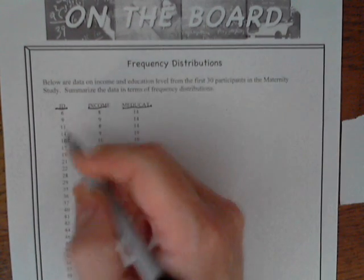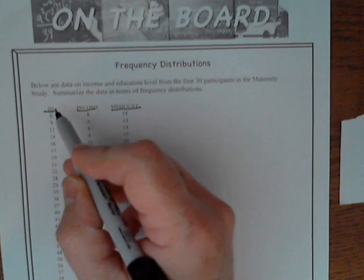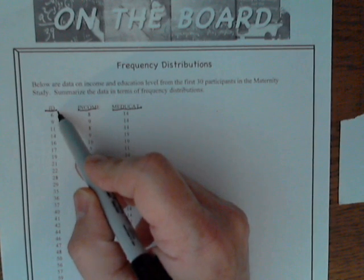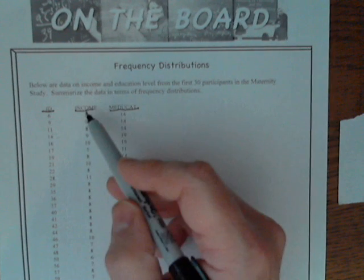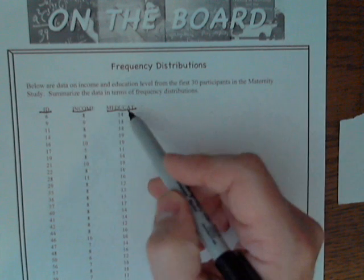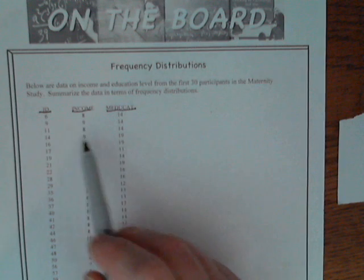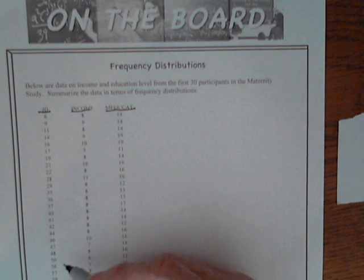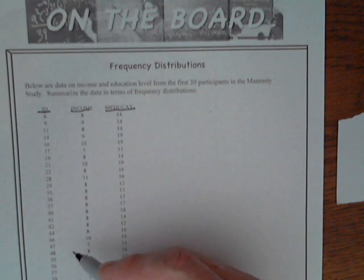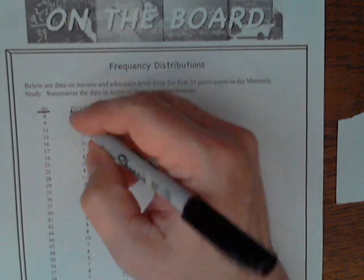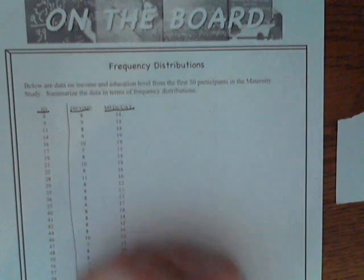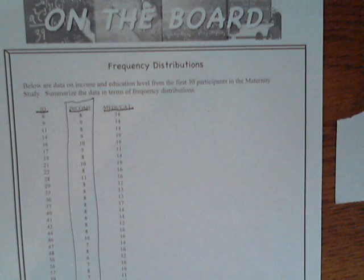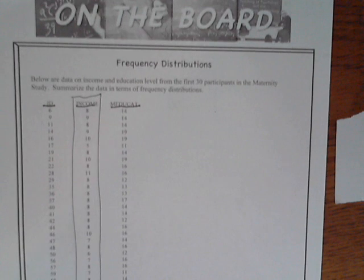The ID number is just an arbitrary number assigned to the persons in the study. This is their income level, and this is the mother's education. So these ID numbers are not really data — they're just like names, nominal level measurement. But what we might want to summarize are these income levels, which just seem like a big series of numbers. We might want to summarize those.